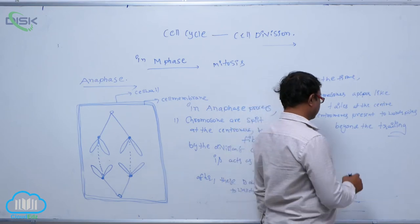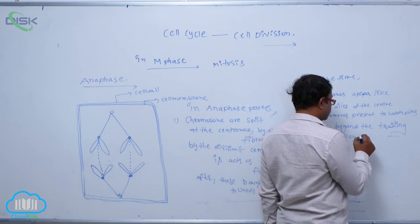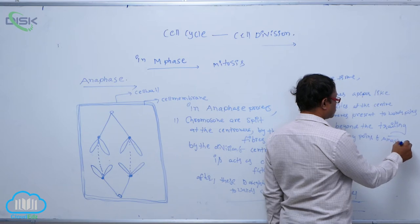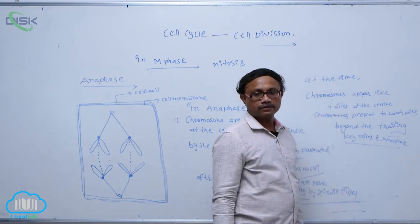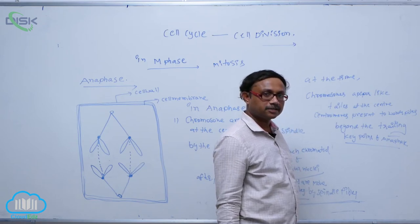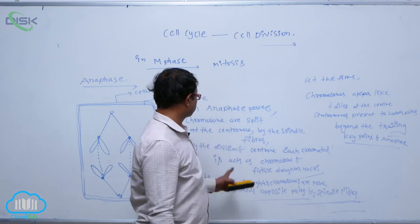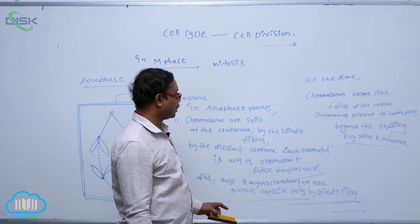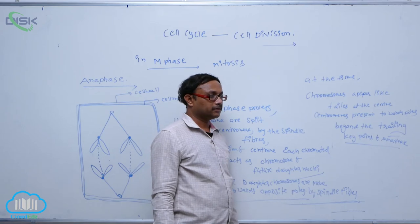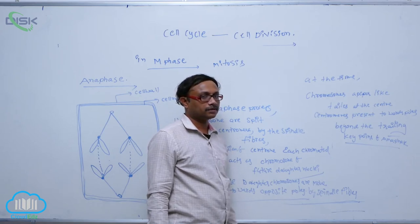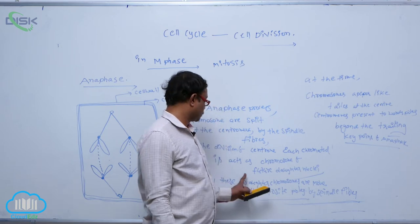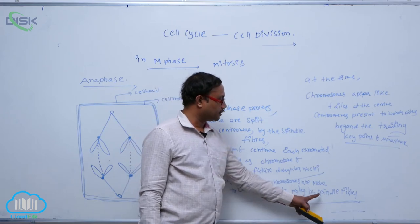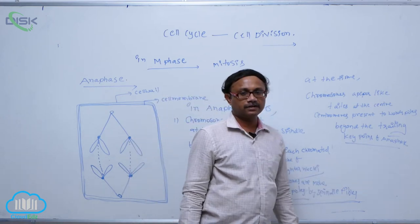The key points of anaphase are: chromosomes are split at the centromere by the spindle fibers. After that, the daughter chromosomes move towards the opposite poles by the spindle fibers. These are the two key points of anaphase.